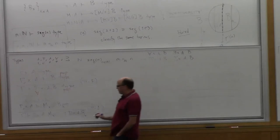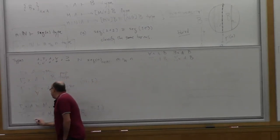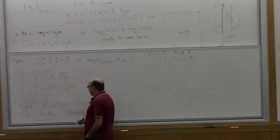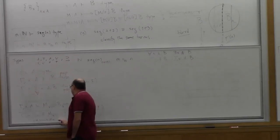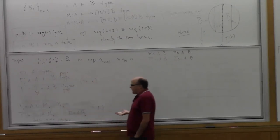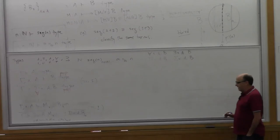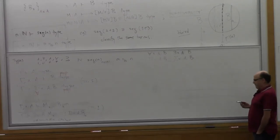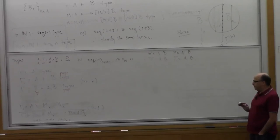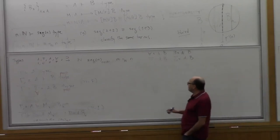So that's the introductory form — the pi introduction rule. This is also notatable as sending X in A to M sub X, or as angle brackets M sub X for X in A. Computer scientists use lambda, so we write it using lambda. That's the introductory form.